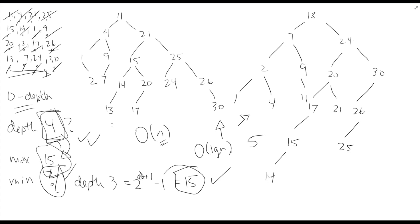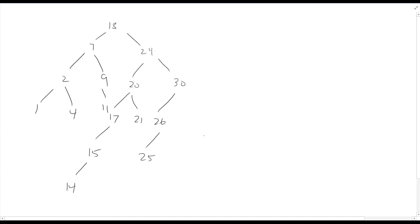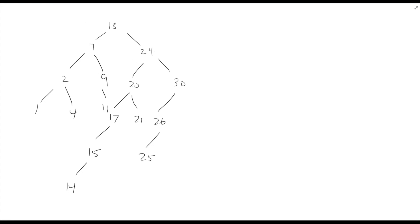Let's take a moment to practice some deletes. Let's start with this node — let's get rid of this 20. This 20 is a node that has two children. So if we want to delete the 20, we need to promote some respectable alternative. It's going to be either the largest in the left subtree or the smallest in the right subtree. The smallest in the right is 21; the largest in the left is 17.